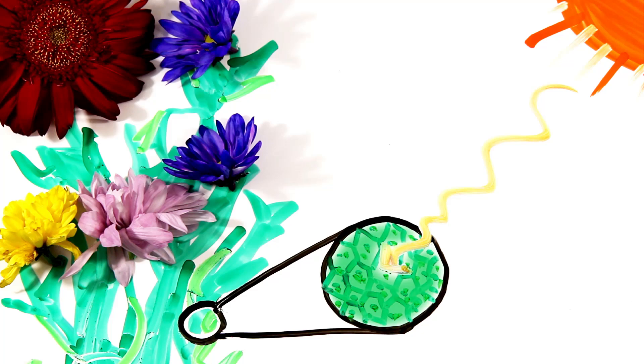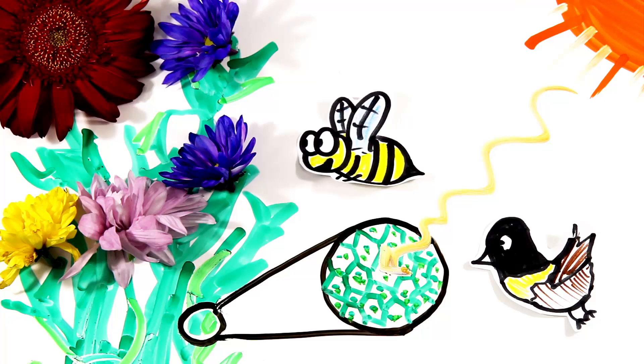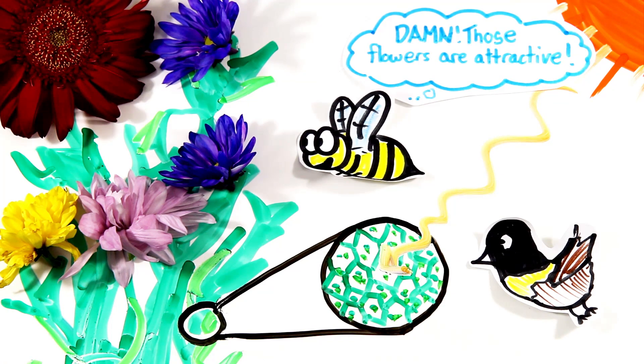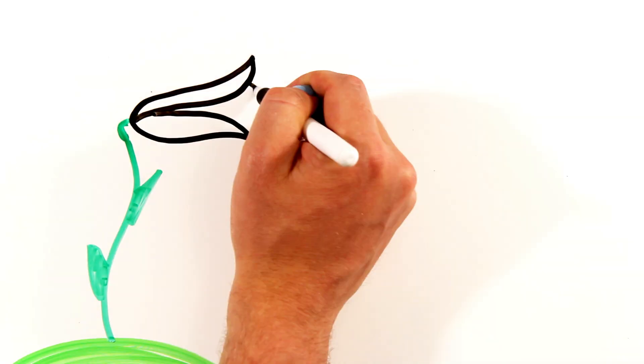So to effectively attract pollinators such as bees, insects, and birds, flowers have evolved to stand out against green. It's why you don't see many green flowers. And flowering plants have even evolved a suite of different colors to attract specific pollinators, known as pollinator syndrome.